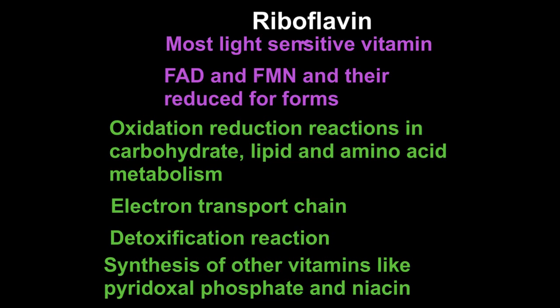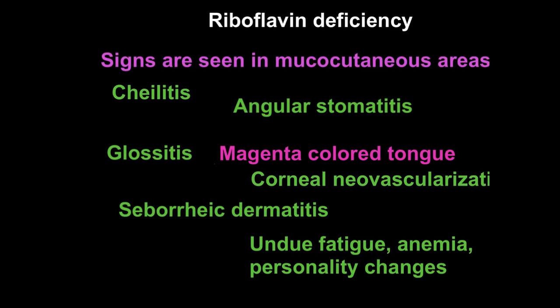Riboflavin also plays a role in detoxification reactions through FAD and FMN, because cytochrome P450 enzymes need FMN and FAD. The synthesis of other vitamins also involves riboflavin: formation of pyridoxal phosphate from pyridoxin (vitamin B6) requires riboflavin, as does synthesis of niacin from tryptophan. Additionally, riboflavin plays a role in iron absorption, so riboflavin deficiency can lead to iron deficiency and anemia.